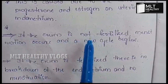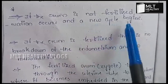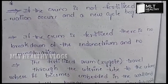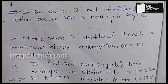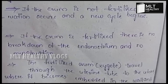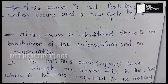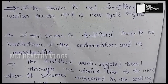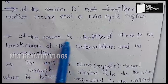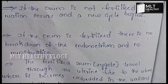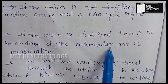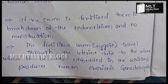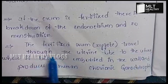If the ovum is not fertilized, menstruation occurs and a new cycle begins. The unfertilized ovum causes the endometrium layers to shed, combining blood, endometrial cells, secretions from glands, capillaries — all released during menstrual flow. Then the next cycle begins again the following month.